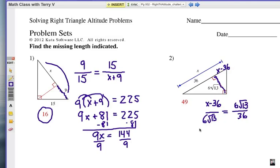We're going to cross multiply here, which is going to give me 36 times x minus 36, use some parentheses. And now we do 6 radical 13 times 6 radical 13.